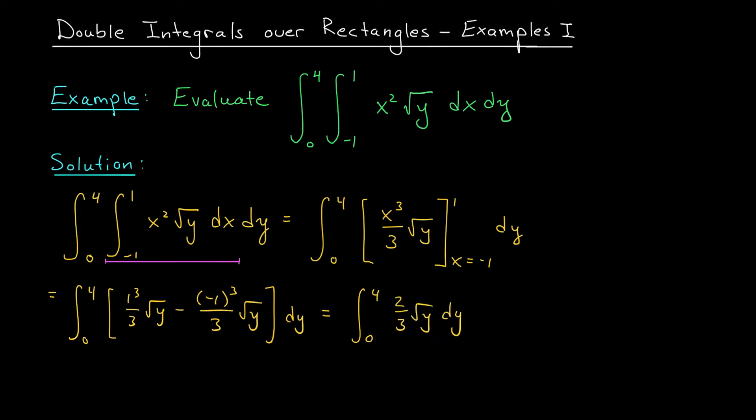Alright, well now this is just a Calc 2 problem. To find an antiderivative for this expression with respect to y, I increase the power by 1 and divide by the new power. So my power here is 1 half, I'm going to increase it to 3 halves and divide by 3 halves. This gives me 2 thirds y to the 3 halves divided by 3 halves, evaluated from 0 to 4.